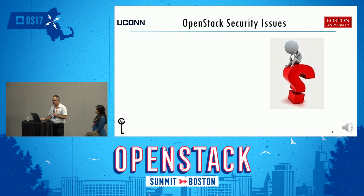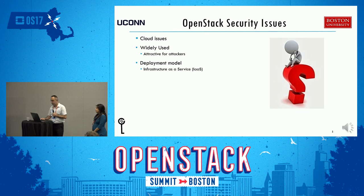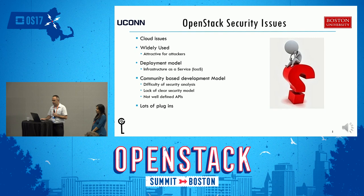OpenStack is a cloud platform, so it suffers from common cloud platform issues. It is a widely used platform, so it is very attractive for hackers. OpenStack is mostly deployed as infrastructure as a service, meaning OpenStack users have high privilege — and high privilege means high risk. OpenStack has a huge code base deployed by different communities around the world, making security analysis very difficult. It gets worse because there is no clear security model for OpenStack and the APIs between components are not well-defined. OpenStack makes use of many plugins, and admins can choose between a bunch of plugins, each with its own vulnerabilities. All of these issues show why security analysis of OpenStack is very important.